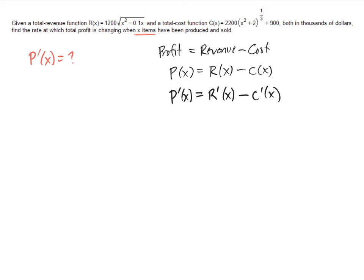So what that means is that if we can find a formula for r prime and a formula for c prime, we can just subtract those two formulas and get our formula for p prime.